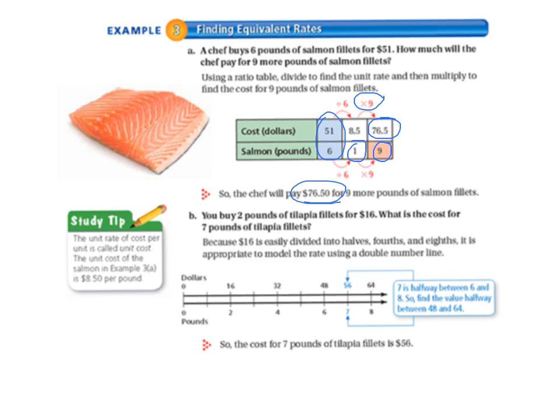Letter B, you buy 2 pounds of tilapia fillets for $16. What is the cost for 7 pounds of tilapia fillets? We're doing the same thing, but we're using a slightly different method. We're using the double number lines. Because $16 is easily divided into halves, fourths, and eighths, it is appropriate to model the rate using a double number line.